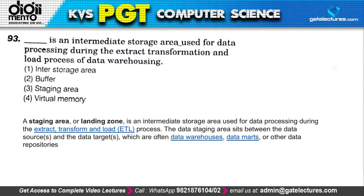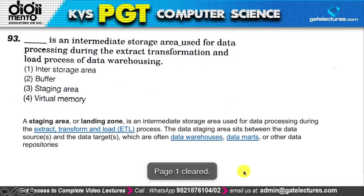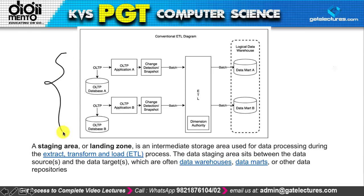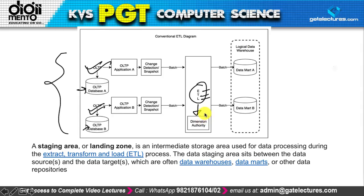The staging area is an intermediate storage area used for data processing in the Extract, Transform, and Load (ETL) process. In the ETL process, if you have an OLTP system using a database, the staging area serves as intermediate storage between extraction, transformation, and loading into the data warehouse.